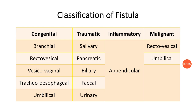Other congenital fistulas include rectovesical fistula between rectum and urinary bladder, vesicovaginal fistula found in females, tracheoesophageal fistula in which the patient will show regurgitation of food, and umbilical fistula due to a persistent vitelline duct.